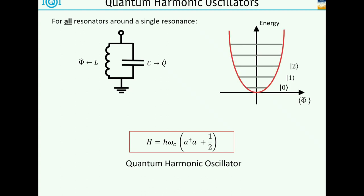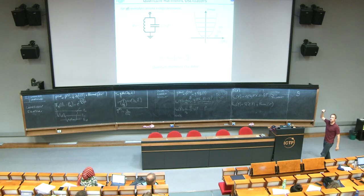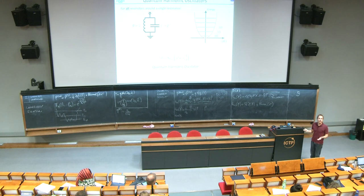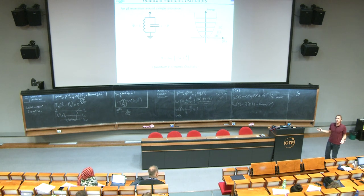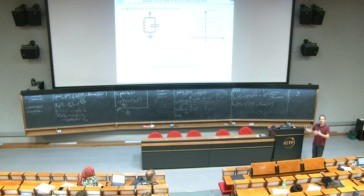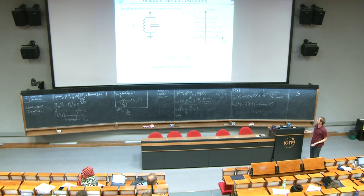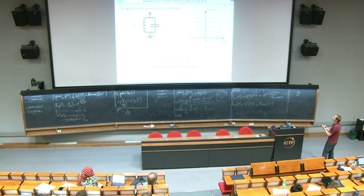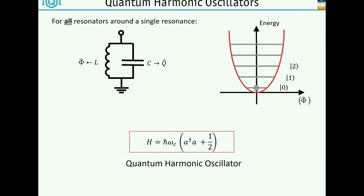Essentially what it means is we now have our quantum system in some sense - we have this harmonic oscillator, we have discrete energy levels in it, but it's sort of a little boring. We've already talked about that a little bit. I can bring it in a ground state quite easily, I can cool it down, but then if I actually want to prepare a non-classical state, say one of those Fock states or something similar, it's actually quite difficult.